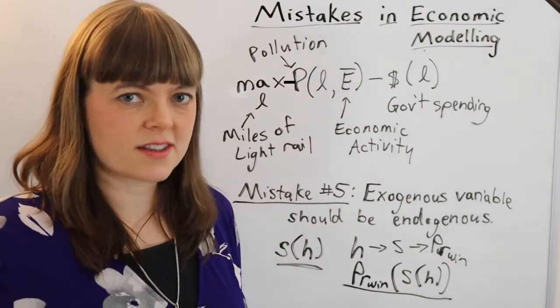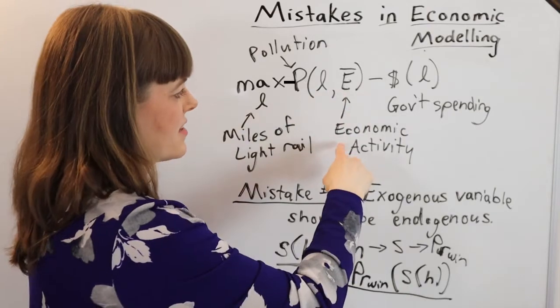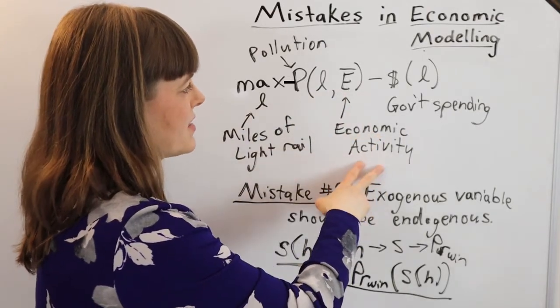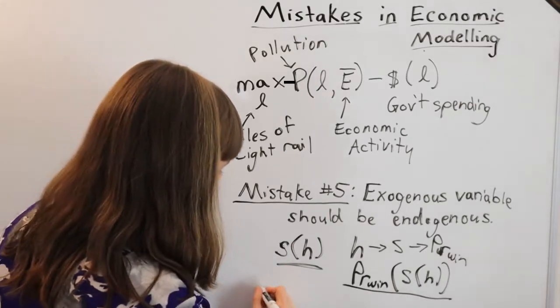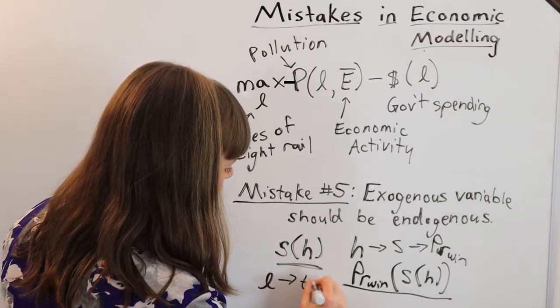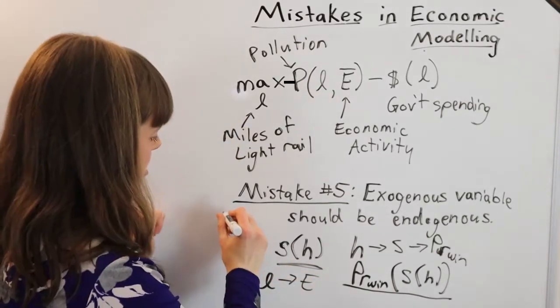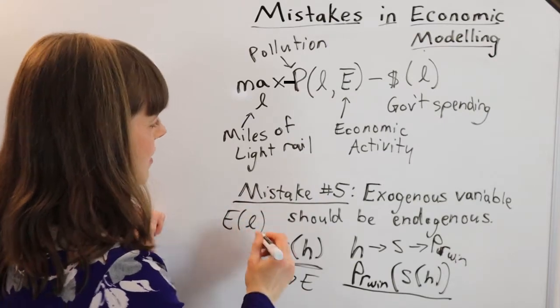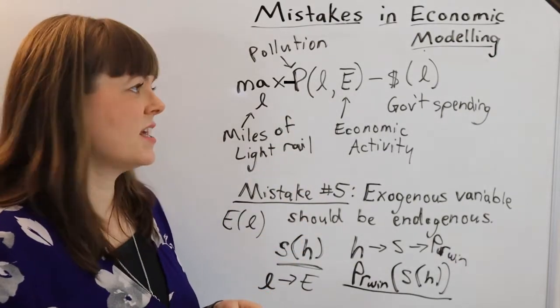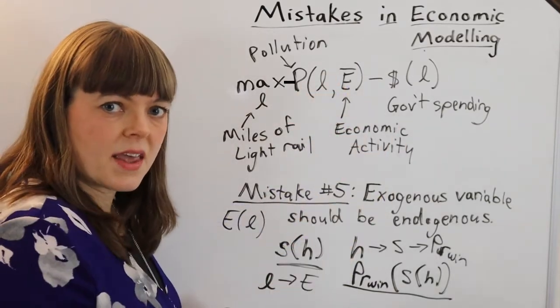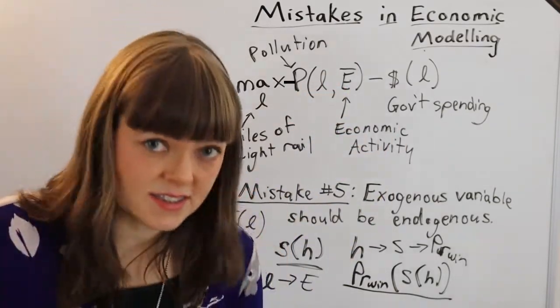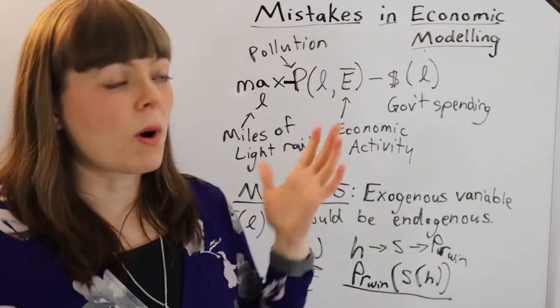Now if someone looks at this model they might say, wait a second, isn't economic activity a function of the light rail? Like doesn't the light rail, building the light rail, actually increase economic activity? Shouldn't E be a function of L? So this person has this critique that this should be endogenous, and that's not necessarily the case. So why not?